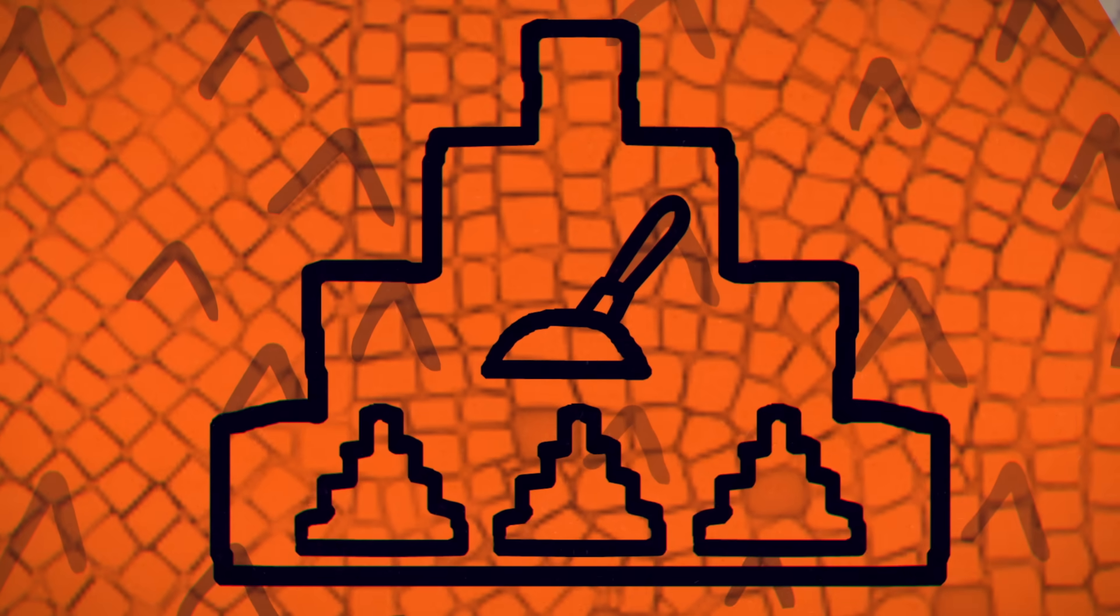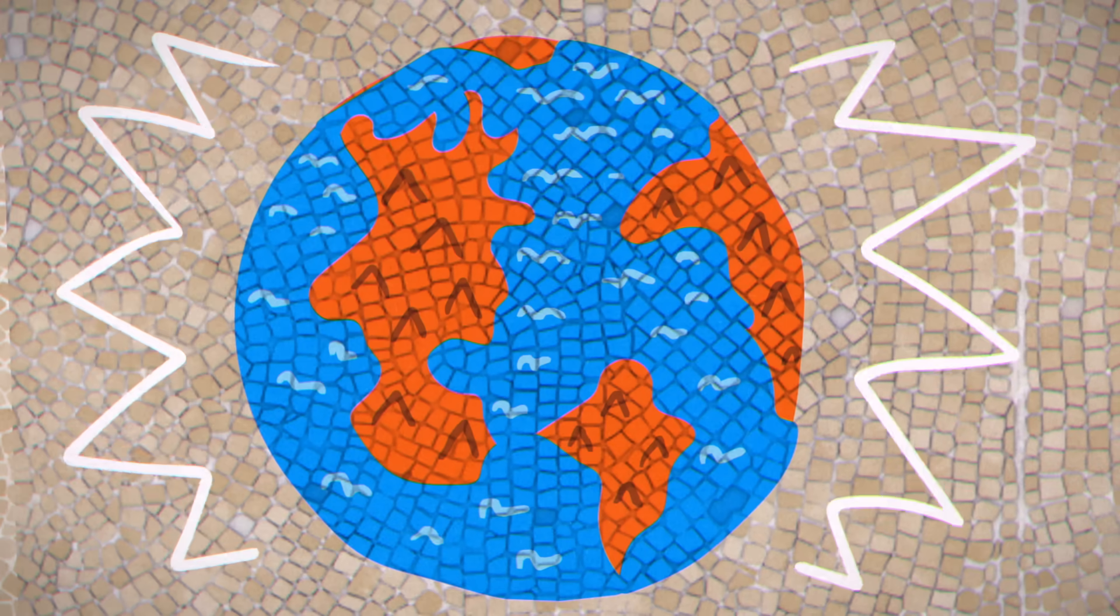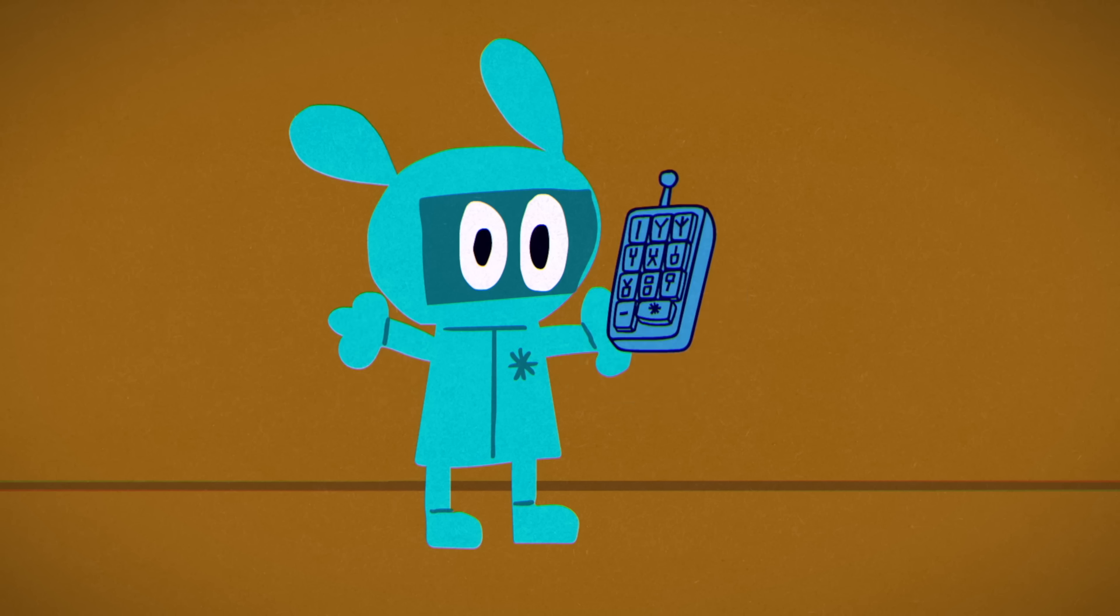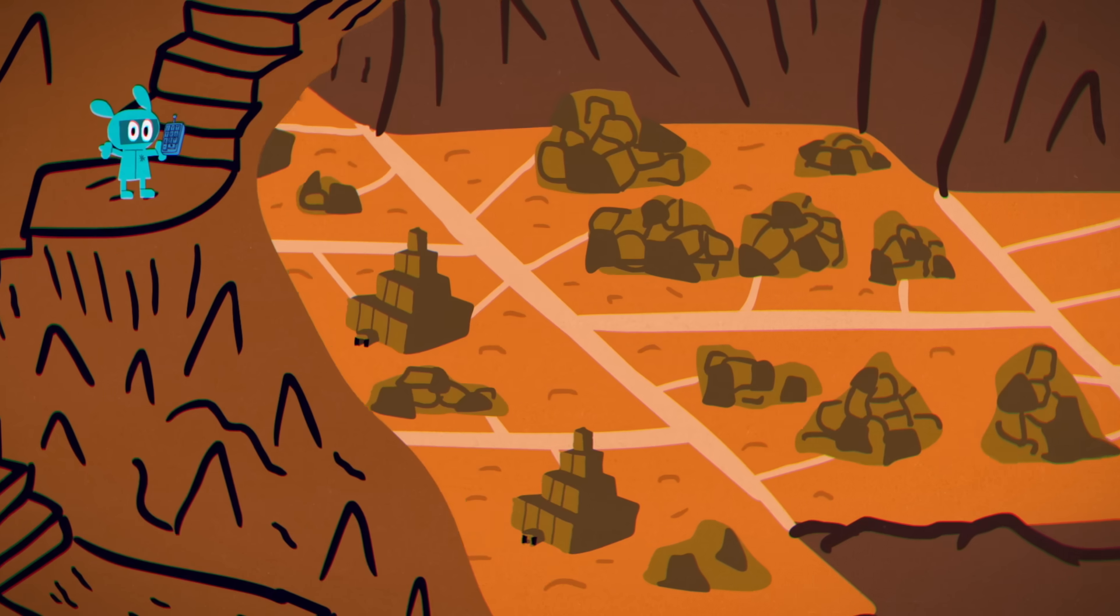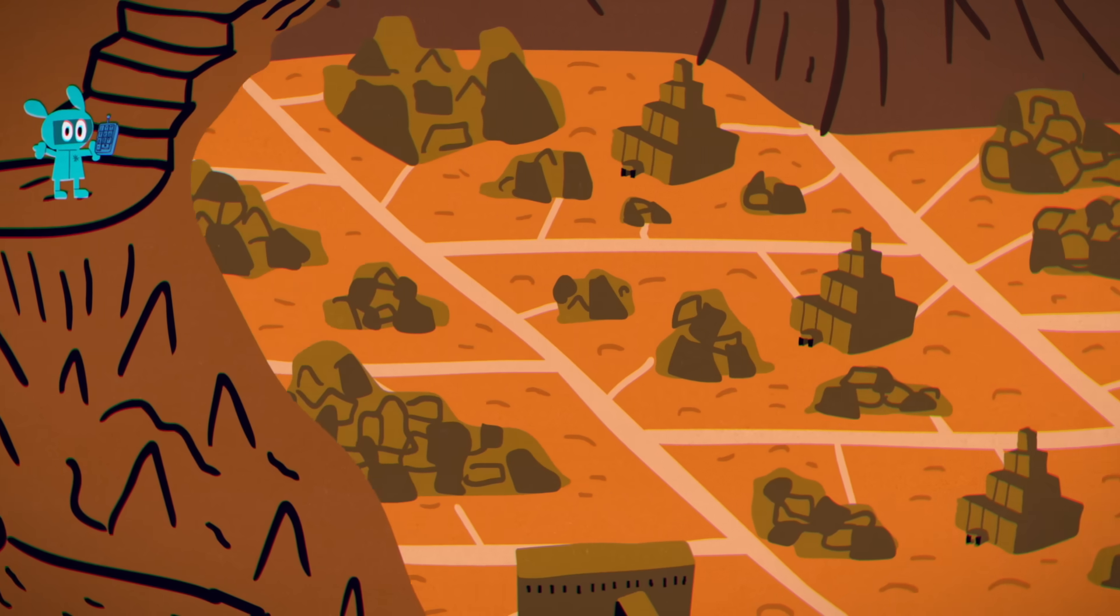The lever is hidden in the Great Pyramid. Pulling the lever again would reverse the process and bring the water back to the surface. But where is this Great Pyramid? The mosaics indicate it should be right here, but it's clearly not.